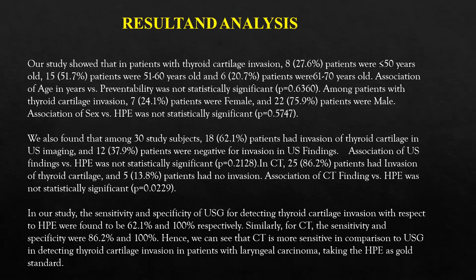On CT, 25 patients had invasion of thyroid cartilage and 5 patients had no invasion. The sensitivity and specificity of ultrasound for detecting thyroid cartilage invasion with histopathology as gold standard was found to be 62.1% and 100% respectively. For CT, the sensitivity and specificity were 85% and 100%. CT is more sensitive when compared to ultrasonography in detecting thyroid cartilage invasion, taking histopathology as the gold standard.